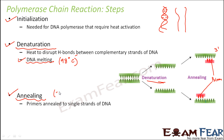During the annealing step, the temperature is lowered. To break something you need to increase the temperature, but when you want to join something the temperature is lowered. A perfect temperature must be maintained — if the temperature is too low or too high, perfect binding will not take place between the primer and the existing strand of DNA. For perfect binding, the temperature must be optimum, somewhere around 50 to 65 degrees Celsius.